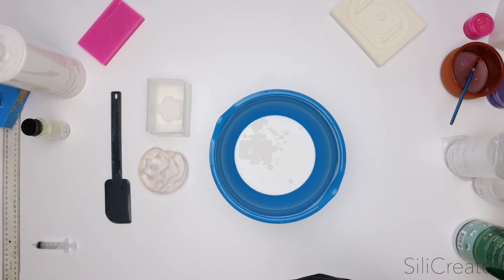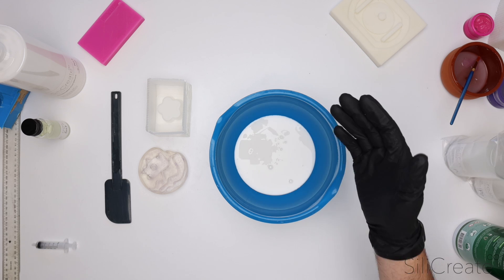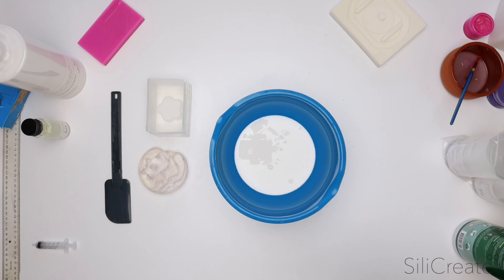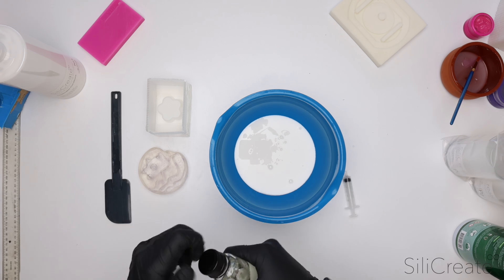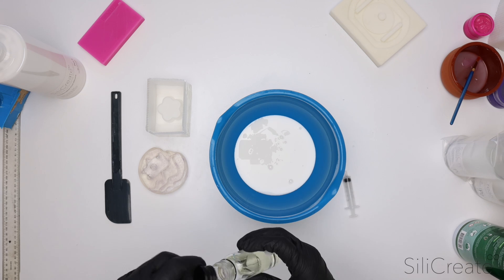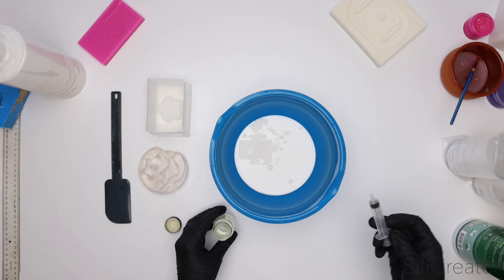If we talk a little bit more about why they're named the way they are: tin cure silicons use a tin salt as a catalyst, whereas platinum cure uses a platinum catalyst in order to cure. I'm just going to go ahead now and add in our catalyst. This stuff you want to use at about three percent by weight, so I'll add six grams.